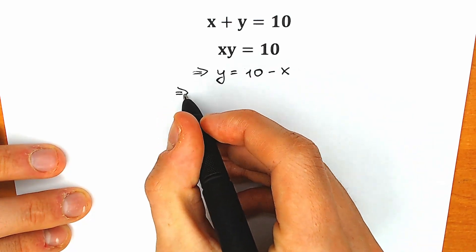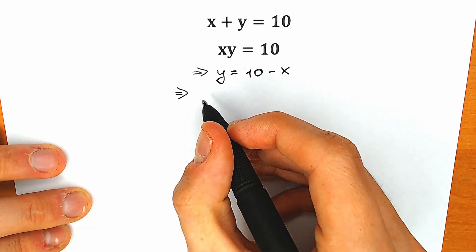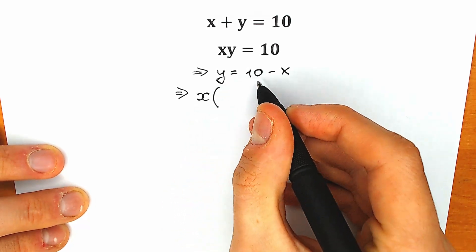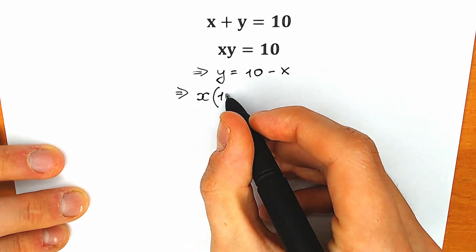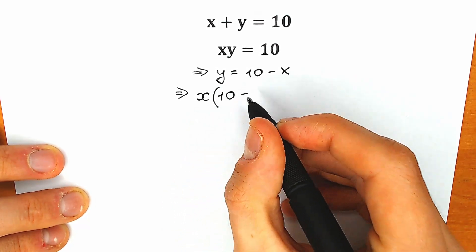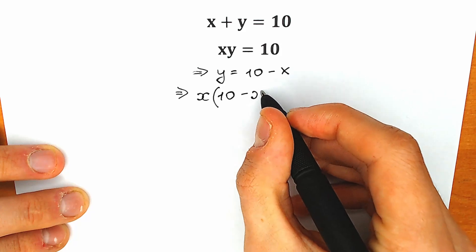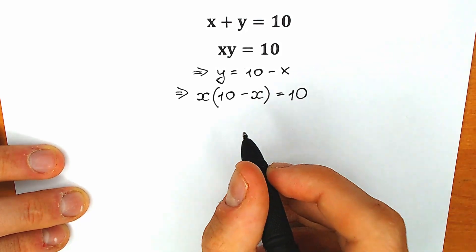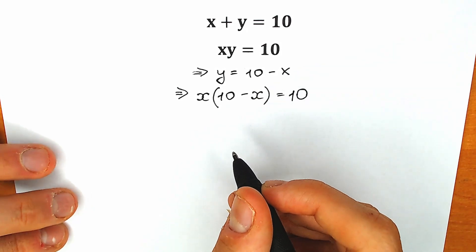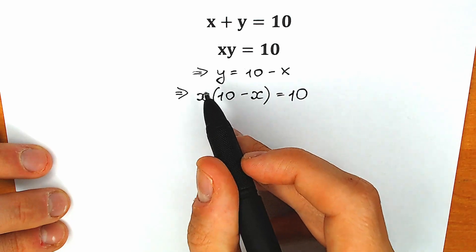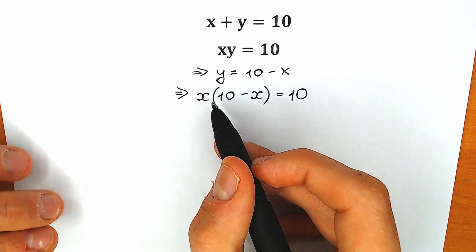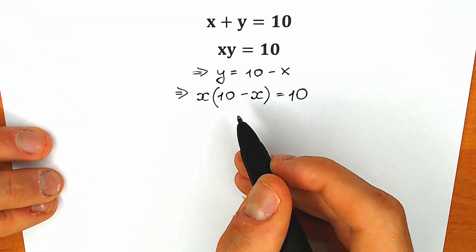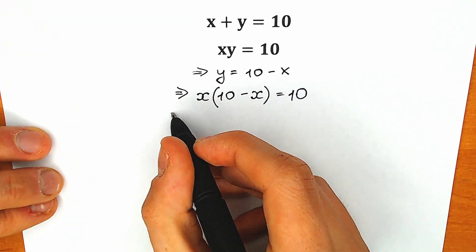Let's do this right now. As a result, what do we have? x times (10 minus x) equal to 10. So here's our expression, and right now we need to find x from here. We don't have y anywhere, so right here we need to find our x.